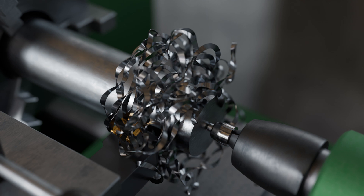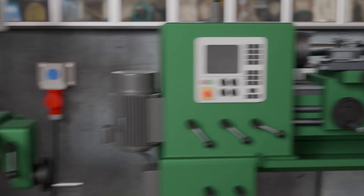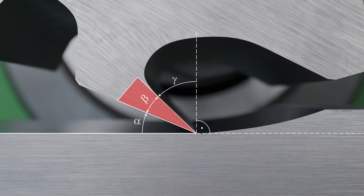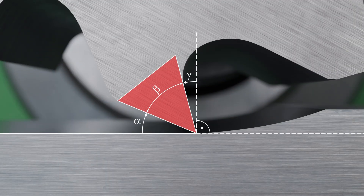This increases brittleness, resulting in chips that break more easily. On the other hand, flow chips can also be avoided by using a smaller rake angle. With smaller rake angles, the wedge angle is necessarily larger, and the chips are strongly deflected.